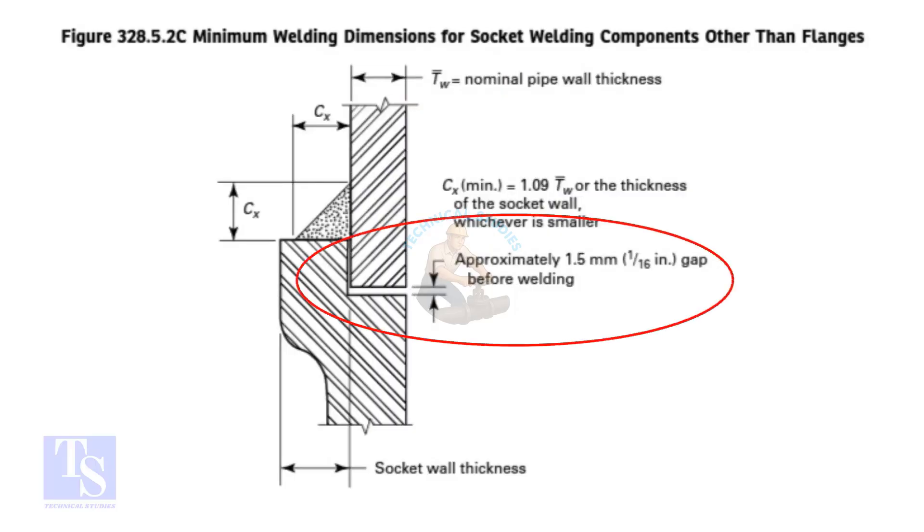In the drawing, a gap is shown between the fitting and the pipe end. The purpose of this clearance in a socket weld is to reduce the residual stress at the root of the weld that could occur during the solidification of the weld metal. It also allows for the expansions and contractions that happen during service.